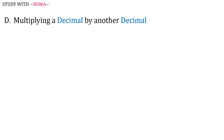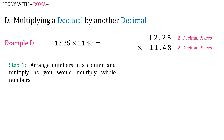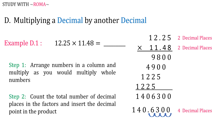For the last part, multiplying a decimal by another decimal. Example number 1: 12.25 times 11.48. Step 1: Arrange numbers in a column and multiply as you would multiply whole numbers. Step 2: Count the total number of decimal places in the factors and insert the decimal point in the product. For the first factor, we have two decimal places. For the second factor, we have two decimal places. So we have a total of four decimal places, and we must move four decimal places to the left. Our final answer is 140.63.